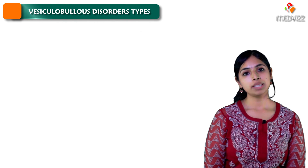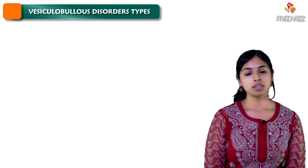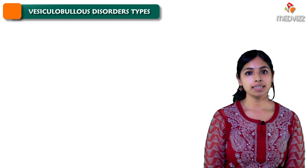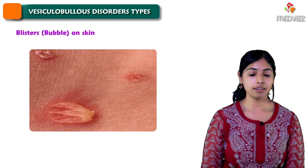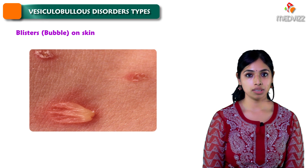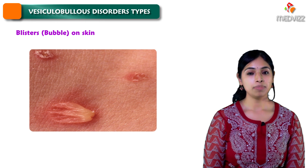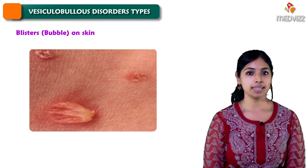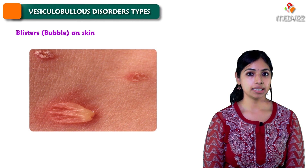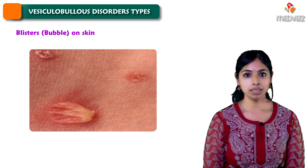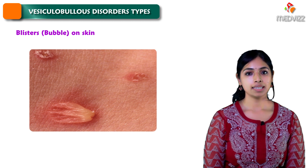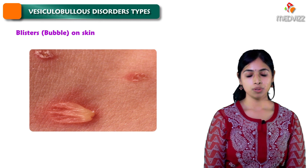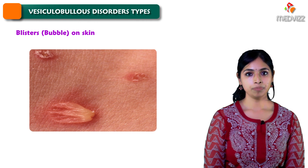Vesiculobullous disorders are conditions where you see blisters on the skin. A blister is basically a medical term for a bubble, and this is seen in a few patients who are susceptible.